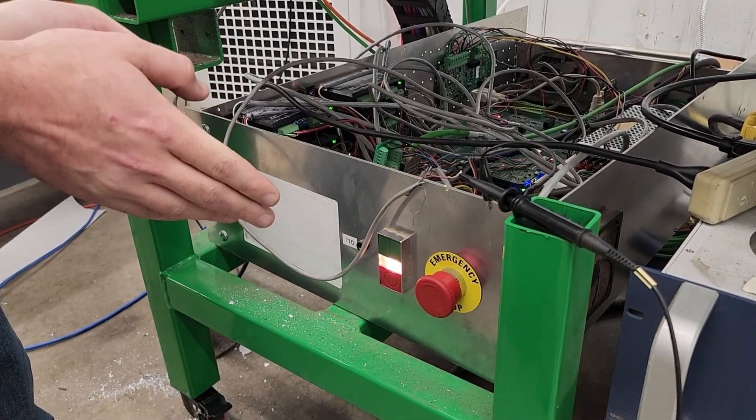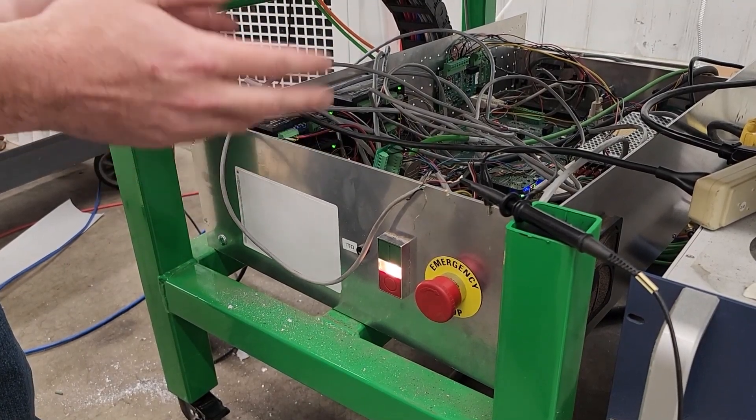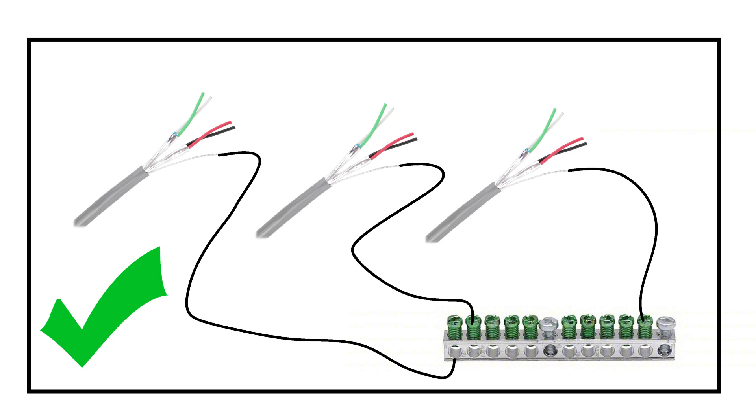And yeah, so this is really important in demonstrating why we need proper grounding in the cabinet. We want all those shields, all the grounds, going to one single grounding bus bar inside the cabinet.